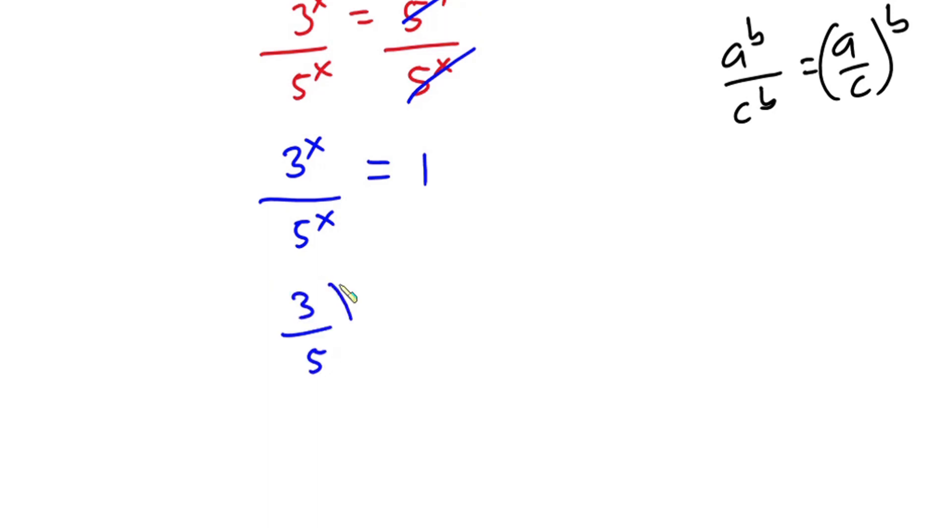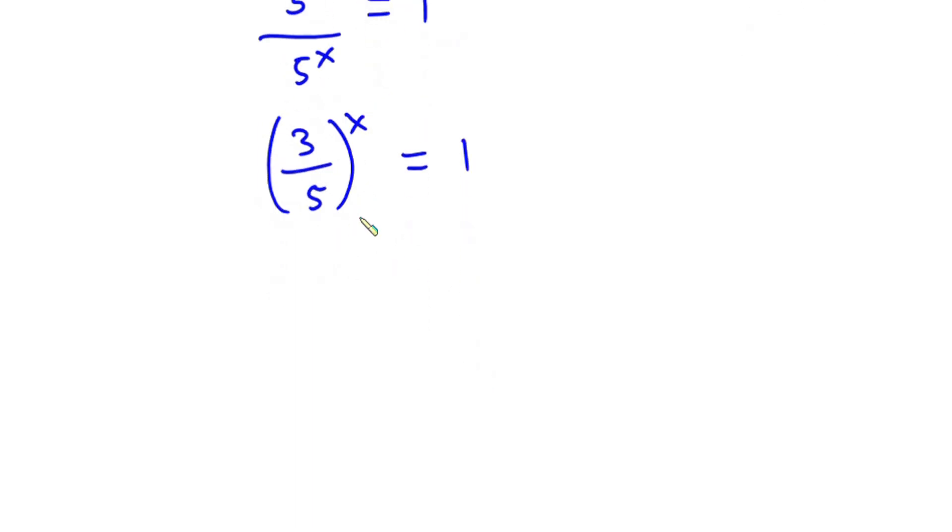Considering the left-hand side of this equation, I can write this as (3/5)^x = 1. Now considering this equation, how can we find x from this? Using indices, I'm going to keep the left-hand side, so we have (3/5)^x equals - now I'll write this one as (3/5)^0.